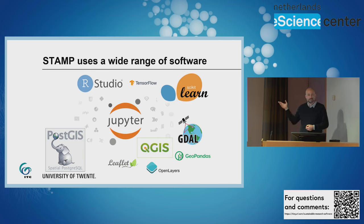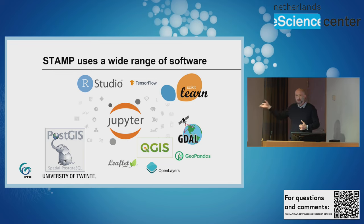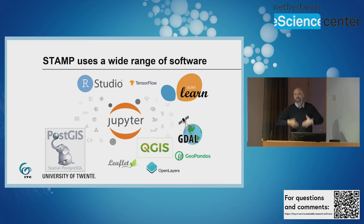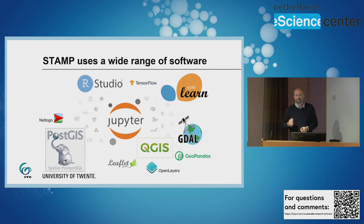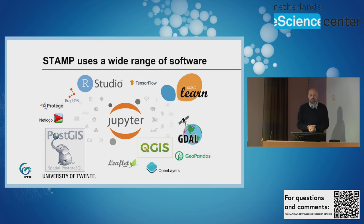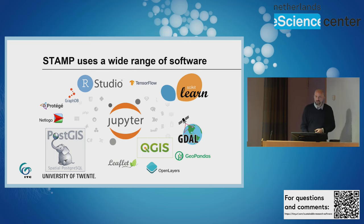Our cartographic colleagues use libraries like Leaflet and OpenLayers to create nice products to communicate with the wider world. For agent-based modeling we mostly use NetLogo. Our semantics colleagues use software like Protégé and GraphDB for that work.